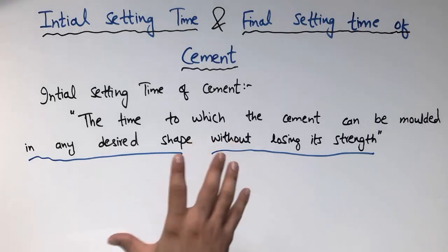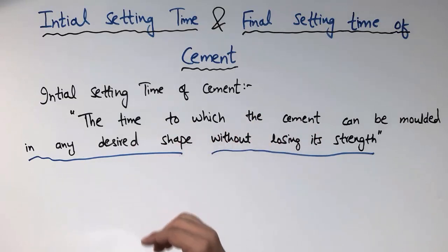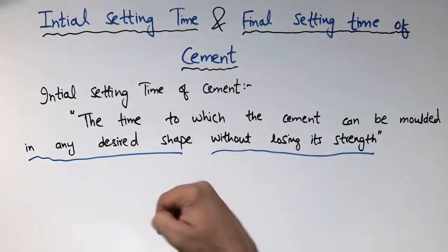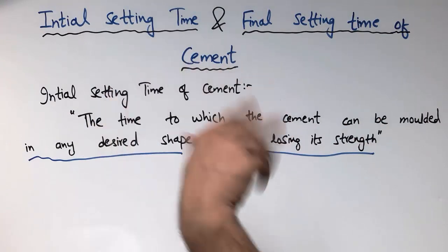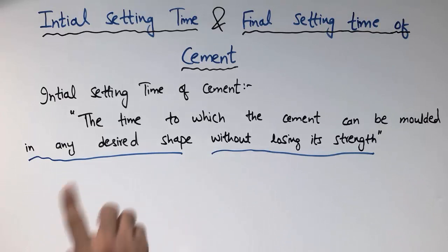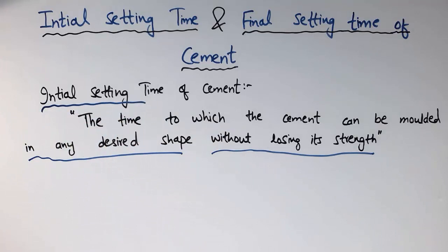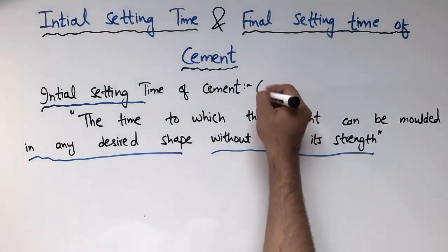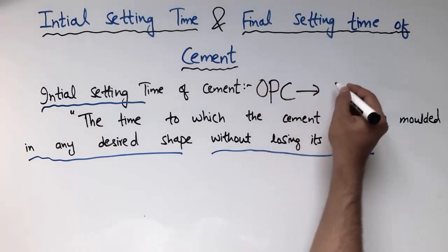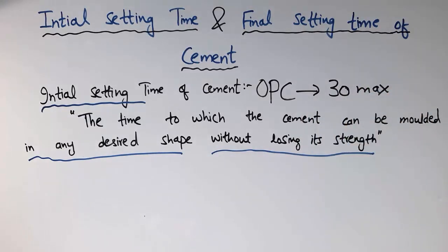In this stage, your concrete will not lose its strength but you can change the concrete from one position into another position. It is the initial time of the concrete when we place the concrete in position — that is why it is called the initial setting time. For ordinary Portland cement, the initial setting time is generally a minimum of 30 minutes.